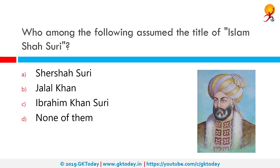Who among the following assumed the title of Islam Shah Suri? Correct answer is Jalal Khan. Jalal Khan was the son of Sher Shah Suri and his successor.